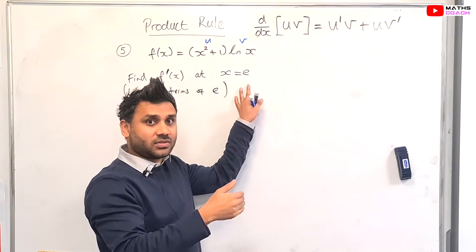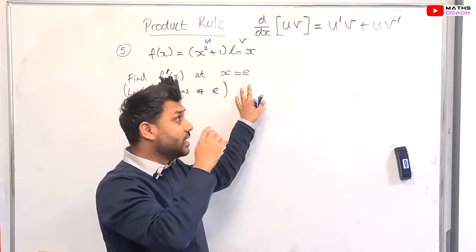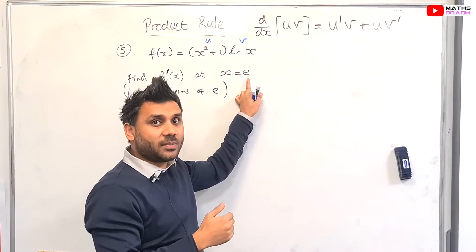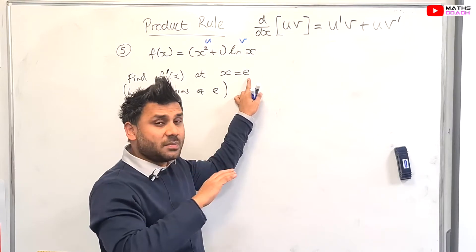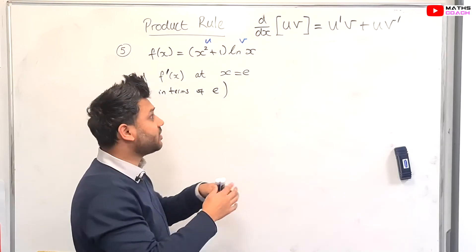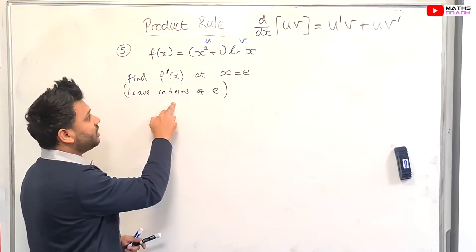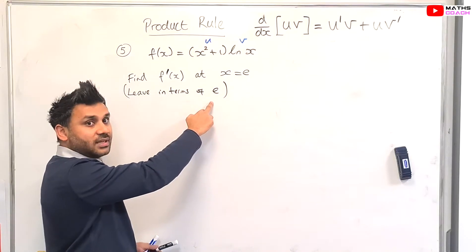Now e is a constant, it's a constant that starts with 2.71, it's actually an irrational number where the decimal will just go on forever, there's no pattern in the decimals. But it's not really important here, main thing is here, we need to leave the final answer in terms of e.